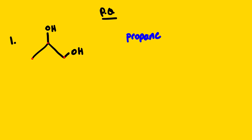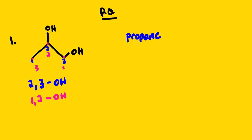We look at the parent chain — how many carbons do we have? We have three carbons, so it's propane. There's no double bond. Looking at the positions, if we start from this side we have 1, 2, 3, meaning our alcohols are at positions 2 and 3. Comparing it with starting from the other side, we have 1, 2, 3 — our OH groups are at positions 1 and 2. We can see that 1 and 2 are the lowest numbers, so this will be the correct direction.